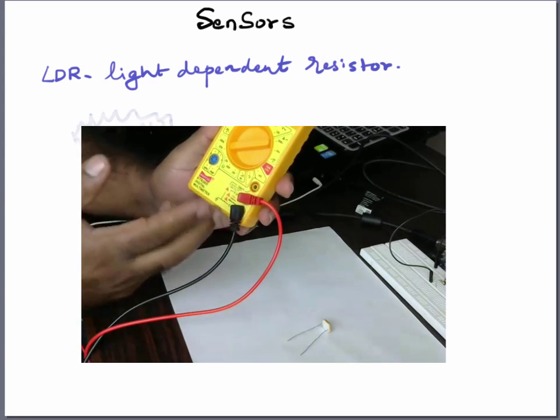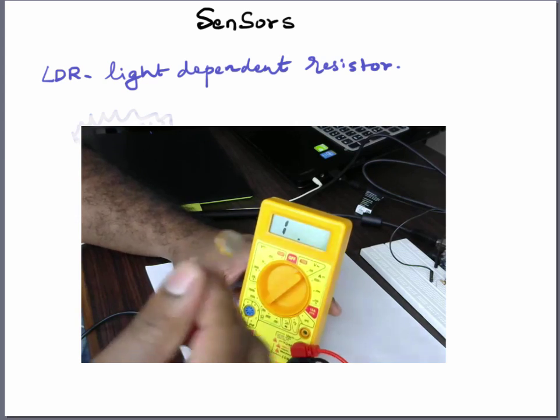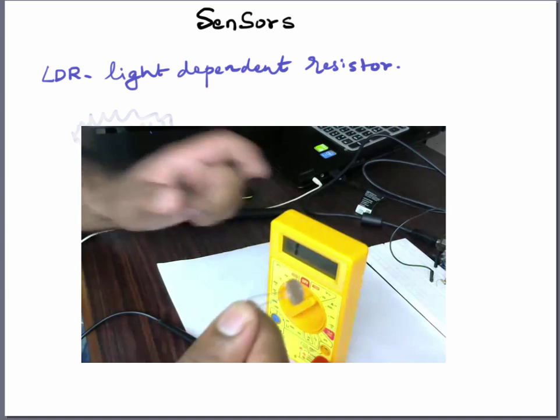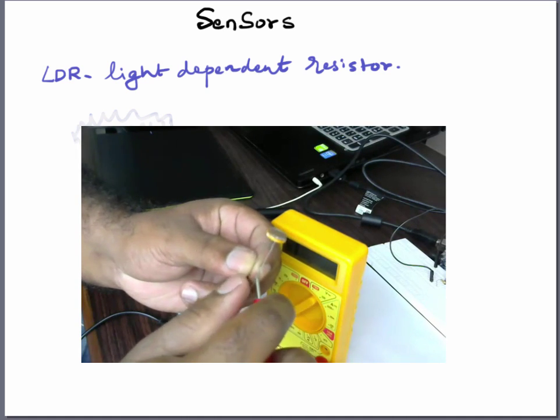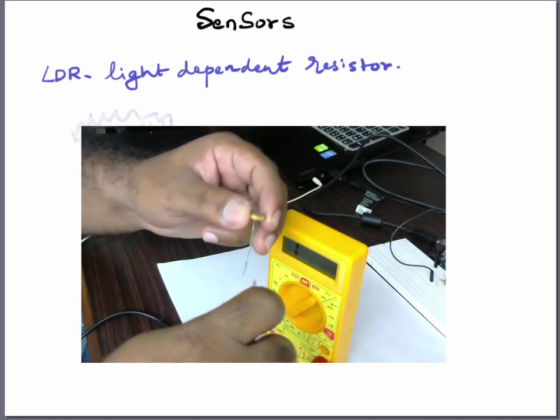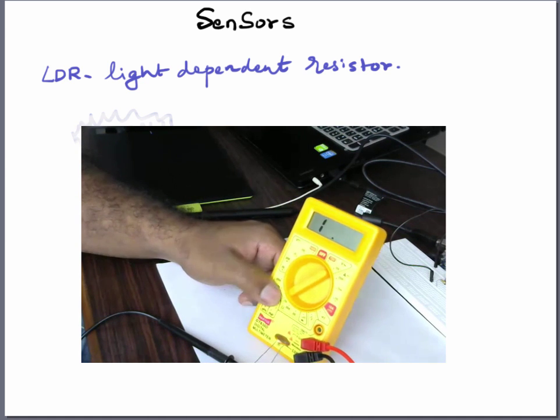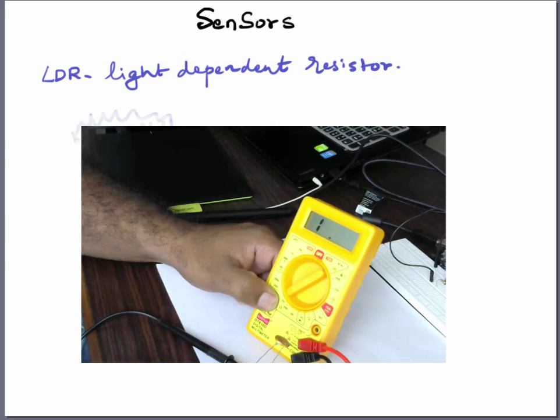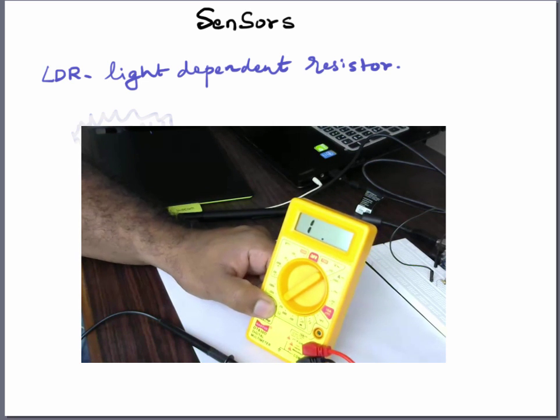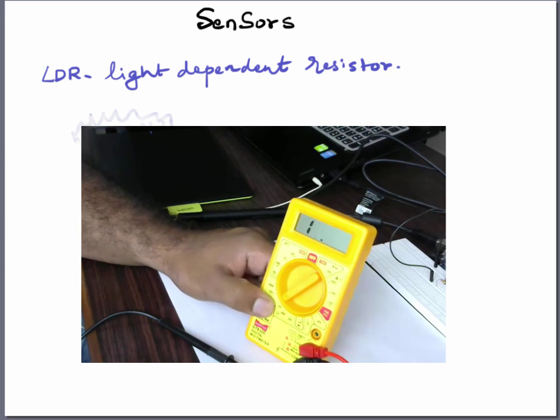So I am holding the LDR in my hand with one pin—this is the positive—and I'm simply going to touch the common with the other lead. I have switched it to 20 kilo ohms because when there is a lot of light like I have now, it's not going to measure at 200 kilo ohms, it's going to be very small.